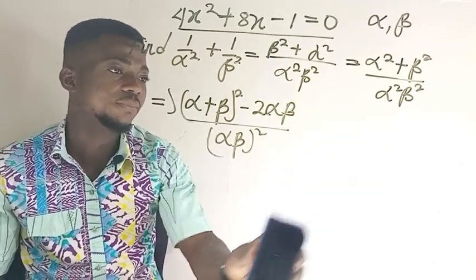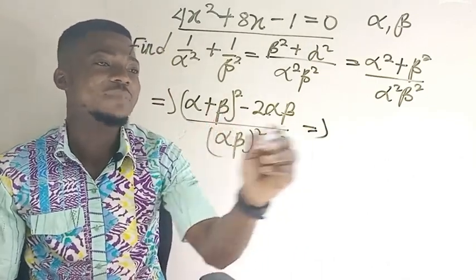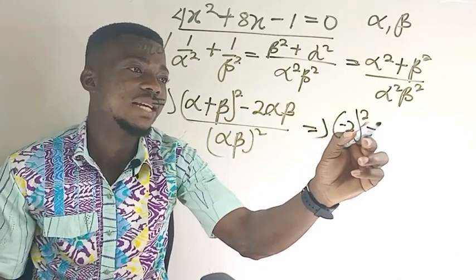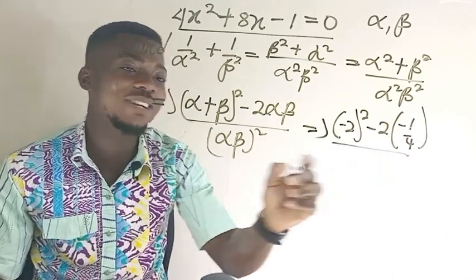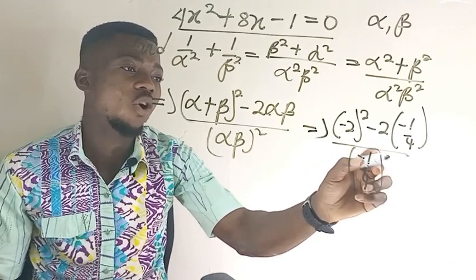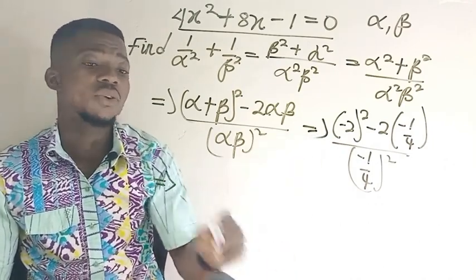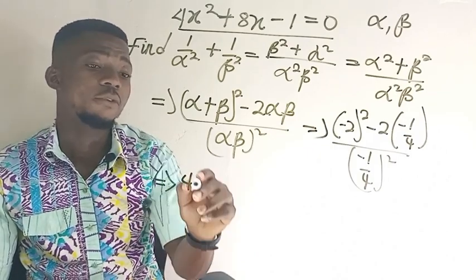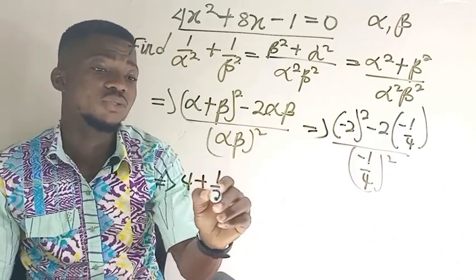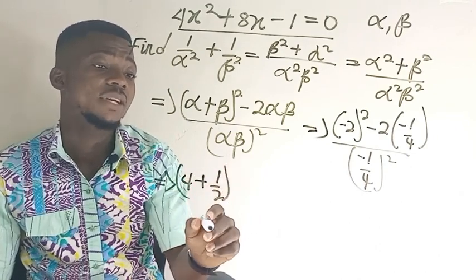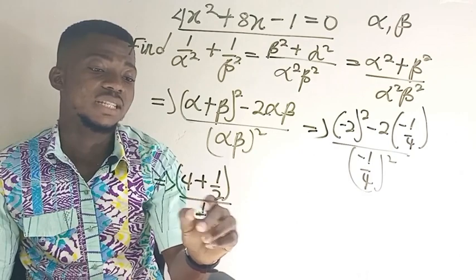So let's come and fix that in and see what we're going to get. We have alpha plus beta, that's going to give us negative 2 squared minus 2 times negative 1 over 4, all over negative 1 over 4 all squared. So negative 2 squared is going to give us 4. Then negative 2 times negative 1 over 4 gives us 2 over 4, that is 1 over 2. And negative 1 over 4 squared gives us 1 over 16.